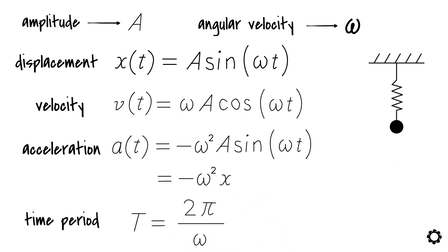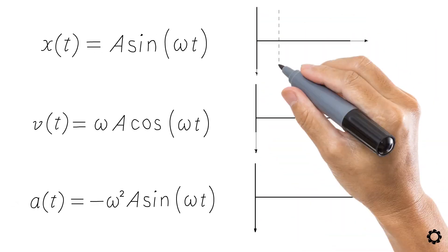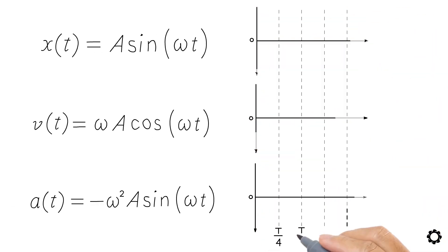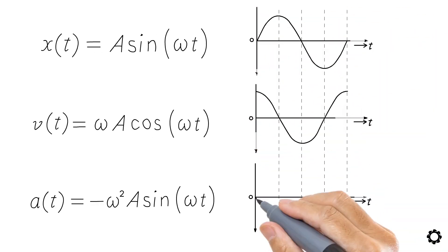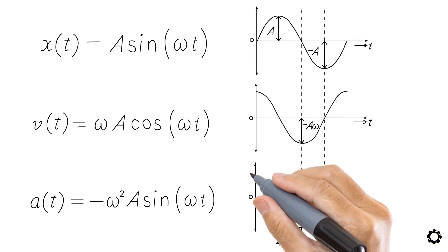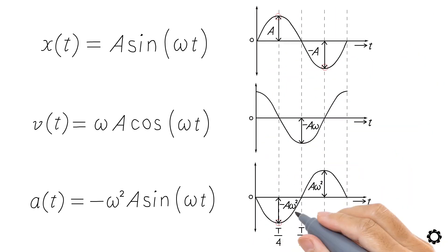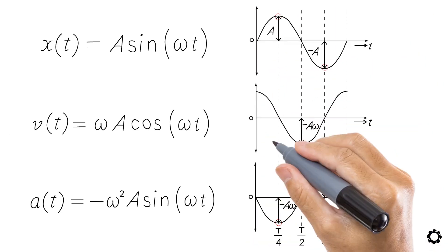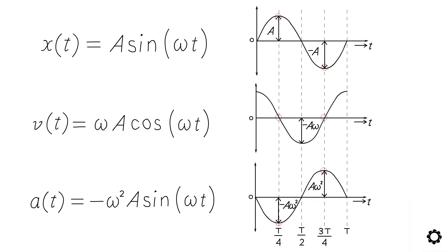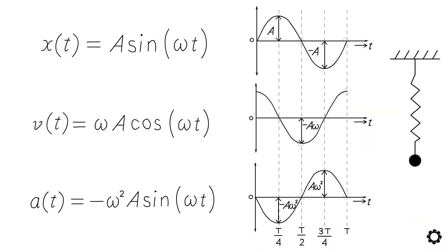Let me show you the three plots together to make the concept crystal clear. Notice how the displacement and acceleration peak at the extreme positions while the velocity goes to zero, and how the exact opposite happens at the rest position. Now when you look at the oscillating mass-spring system, you can intuitively get an idea of the velocity and acceleration at each point.